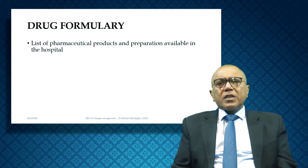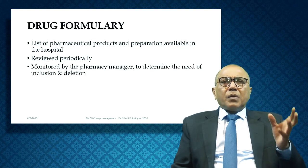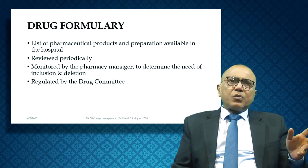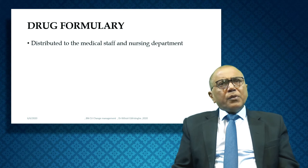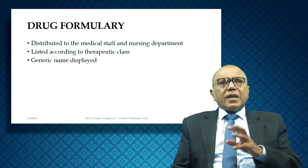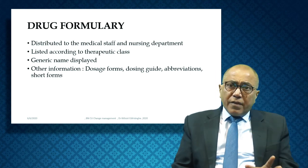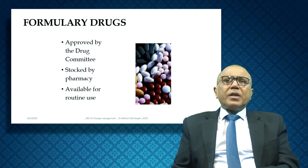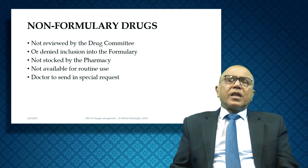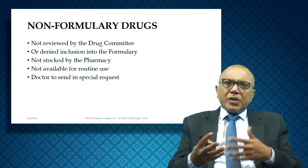We have a list of pharmaceutical drugs in a formulary, reviewed periodically — annually — and monitored by the pharmacy manager. You can include new pharmaceuticals or delete previous ones. It is regulated by the drug committee and distributed to medical and nursing staff. The formulary is categorized by therapeutic class, with generic names displayed, dose forms, dosage guide, and abbreviations. The list is approved by the drug committee, stocked by the pharmacy, and available for use including by nurses. Non-formulary drugs — not reviewed by the drug committee — are used for local purchase and emergency only.